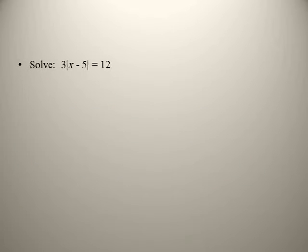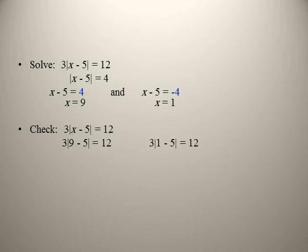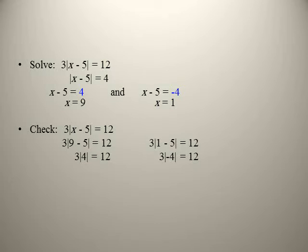Solve 3|x − 5| = 12. First, divide both sides by 3: |x − 5| = 4. Then x − 5 = 4 or x − 5 = −4, so x = 9 or x = 1. Check: 3|9 − 5| = 3(4) = 12 ✓, and 3|1 − 5| = 3(4) = 12 ✓. Both answers are correct.